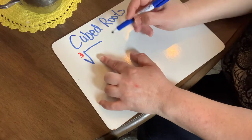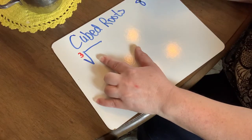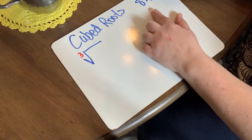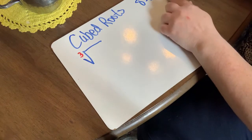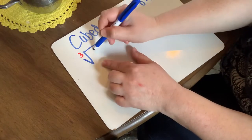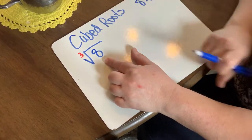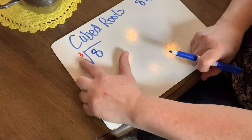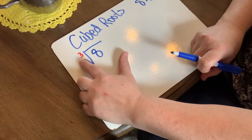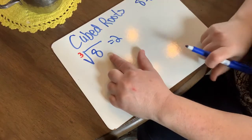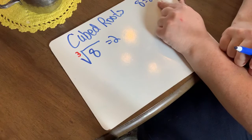I know that 8 equals 2 to the third power, or 2 times 2 times 2 — three factors. So if I put 8 inside my cubed root house, I'm looking for the three factors that are the same number for 8. The answer would be 2, because 2 to the third power is 8.